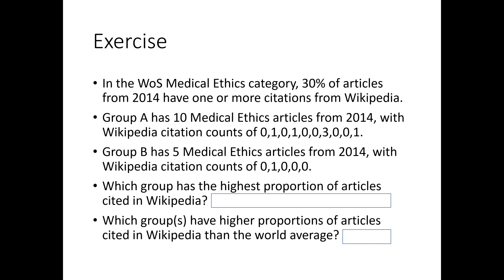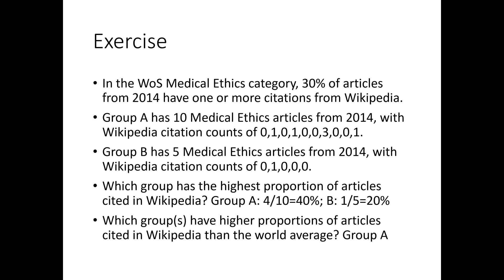The answers to this exercise are: group A has 40% cited, group B has 20% cited, so group A has the higher proportion of articles cited. And group A has a higher proportion cited than the world average — the world average is 30% and group A's 40% is higher. So given a dataset, we can compare the proportion cited to the world average or to another group, provided they're the same field and year in both cases.